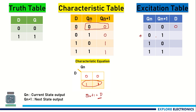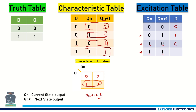For the second case, Qn equal to 0 and Qn+1 equal to 1 — we find this 0, 1 state in the table and D should be 1. Similarly, if the current output is 1 and next state expected is 0, that is 1, 0 — what we need to pass from D is 0 again. For 1, 1 — current state is 1 and next state is 1 — we need to pass D as 1. This completes the excitation table for D flip-flop.